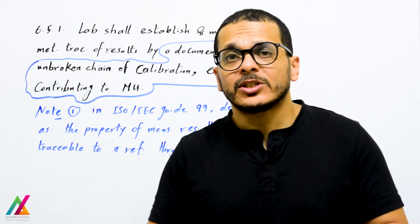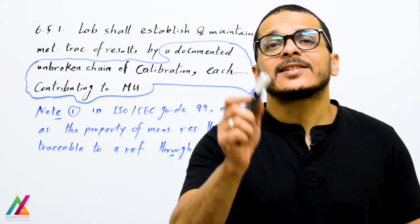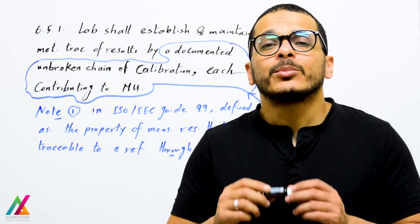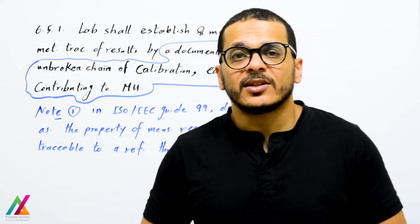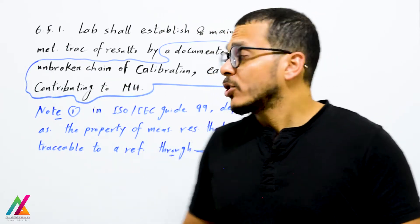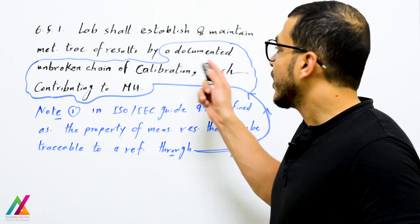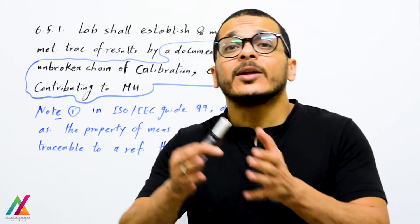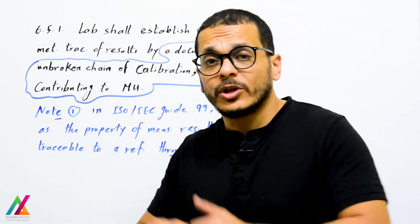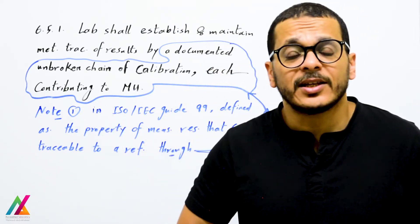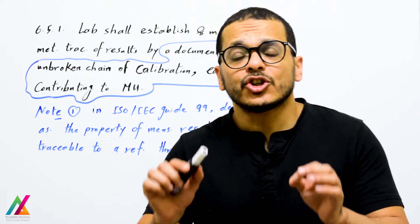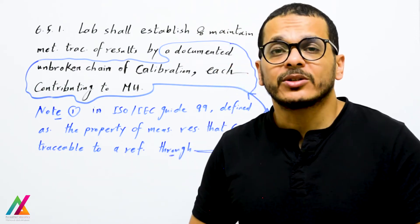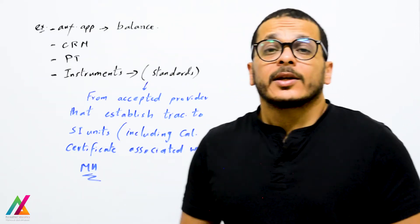For each piece of equipment you will find a certificate including measurement uncertainty. It will be a documented unbroken chain of calibration for all equipment inside the lab, each contributing to measurement uncertainty.